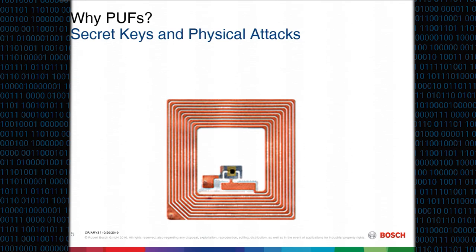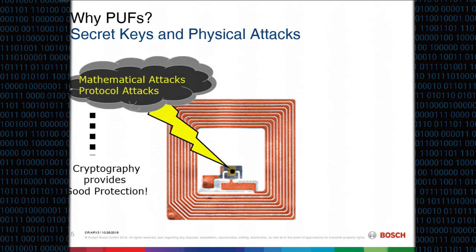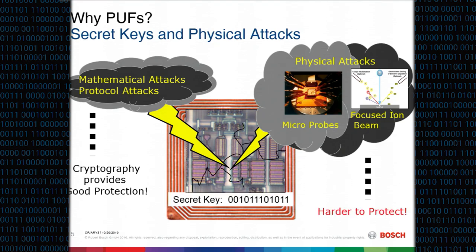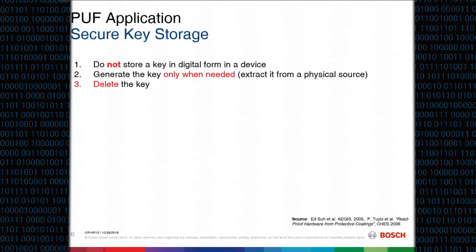Cryptography is always based on the assumption that the secret key is kept secret. With a huge number of distributed devices, this can be an optimistic assumption. We know different kinds of attacks — mathematical or protocol attacks, where crypto provides good protection, but also physical attacks like microprobing and focused ion beam, which are much harder to protect against. The idea of PUFs is not to store the key in digital form in the device, but to generate the key only when needed by extracting it from the physical source, and to delete it afterwards.